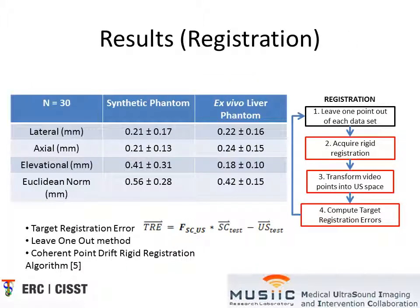The table shows our target registration error results. We use the leave-one-out method where each point is subsequently used as the test point, while the rest of the points are used in the coherent point drift algorithm to compute a transformation. We achieved a mean error of 560 microns and a standard deviation of 280 microns for a black synthetic phantom.